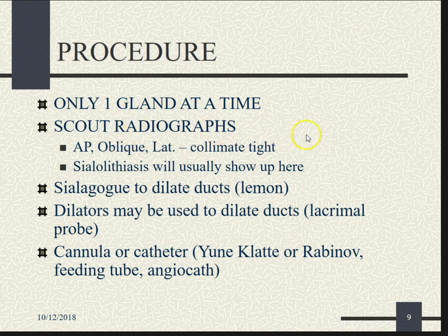We only look at one gland at a time. Dr. Rosenberg always wanted us to do scout radiographs — typically a slight oblique and a lateral with tight collimation — just to see if there are any stones or cause for concern before the doctor starts probing for the glands. This is the business of sialolithiasis: that's a stone that could be blocking the passage, and the doctor would have to decide whether to go ahead with the study.